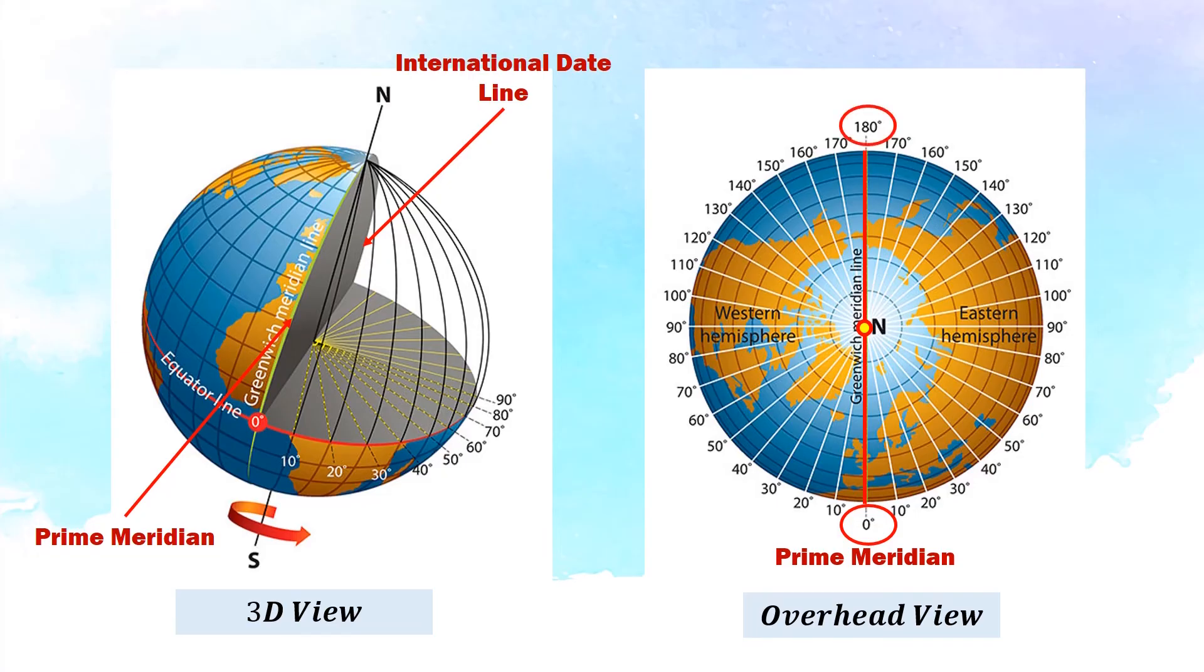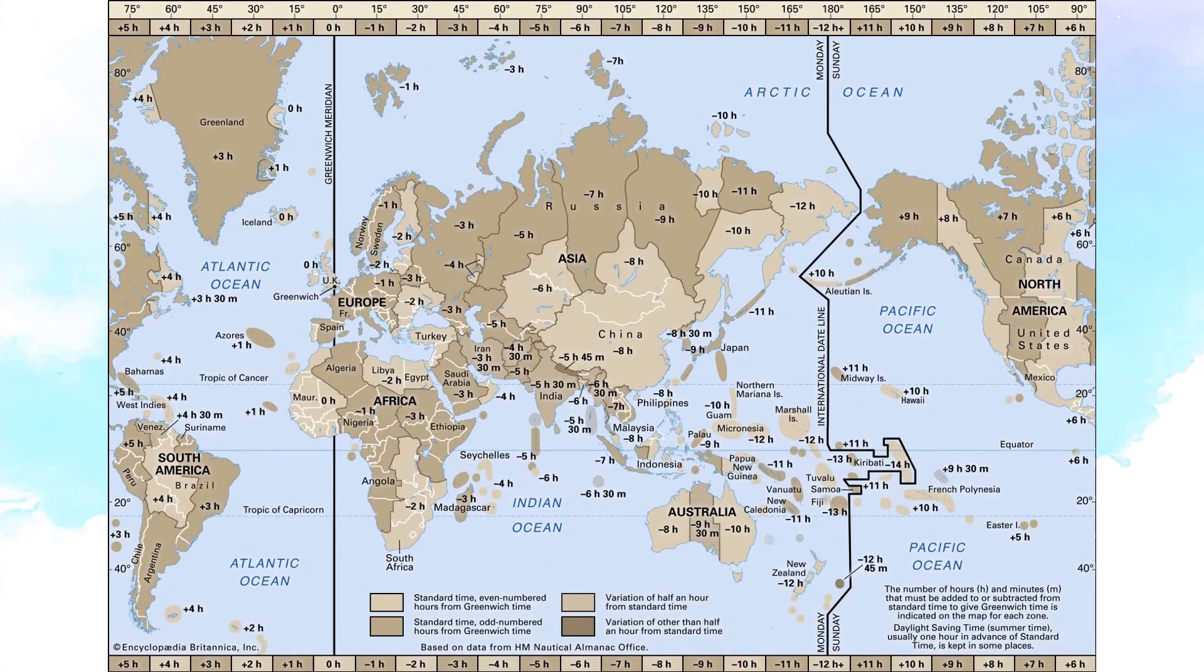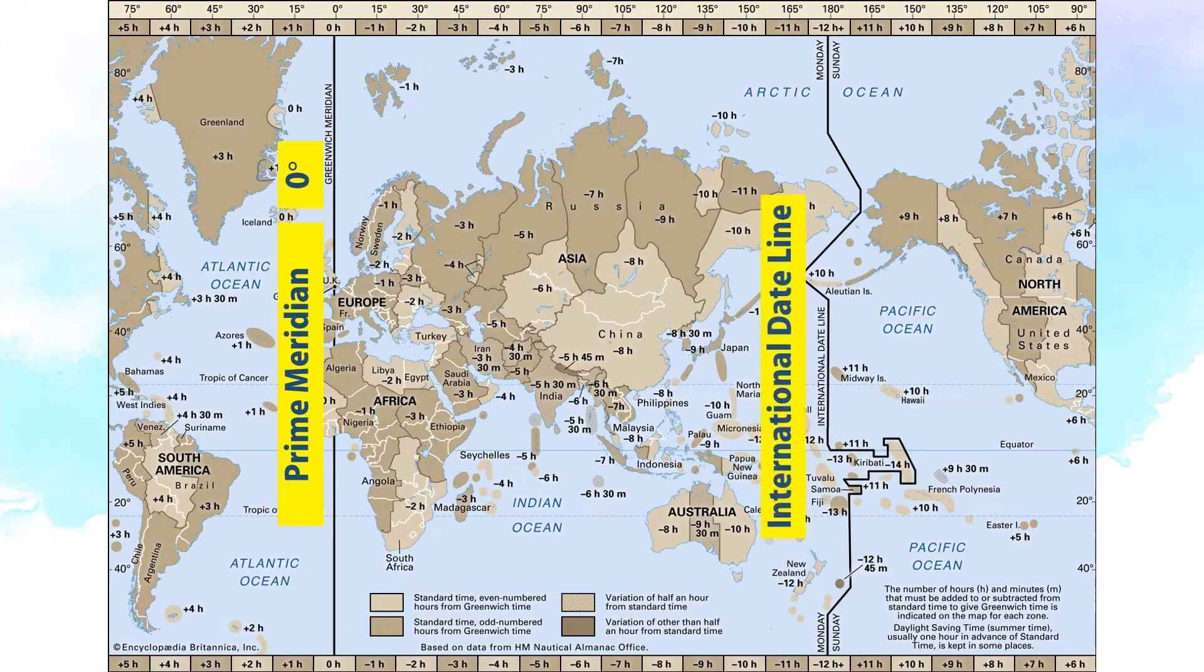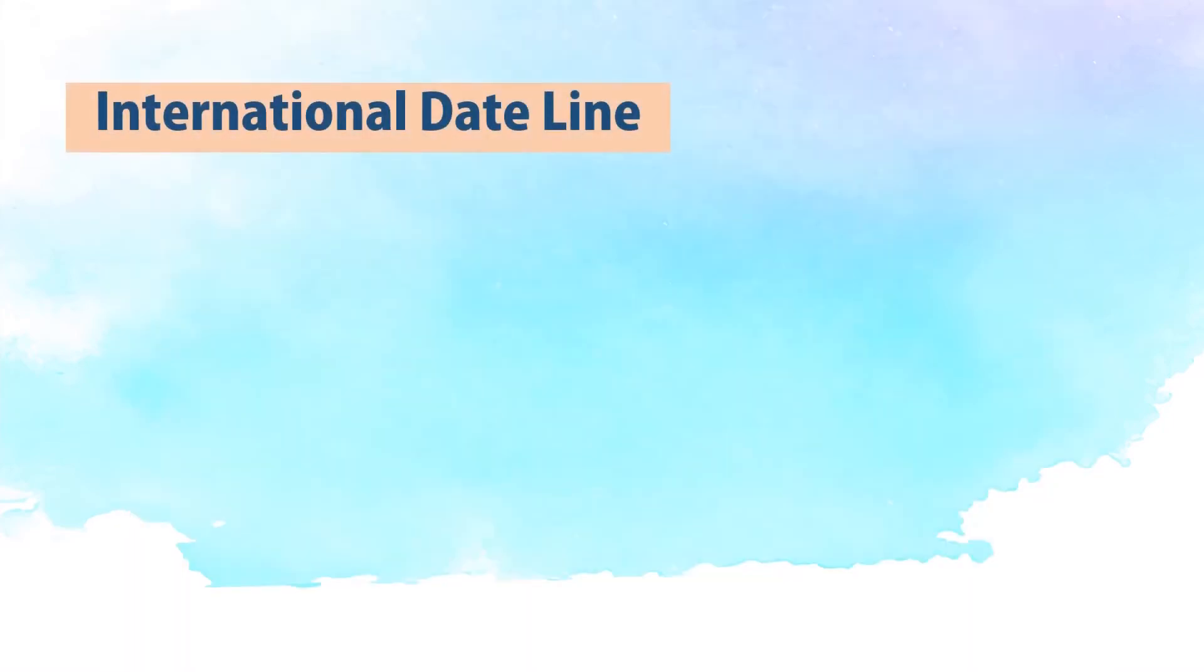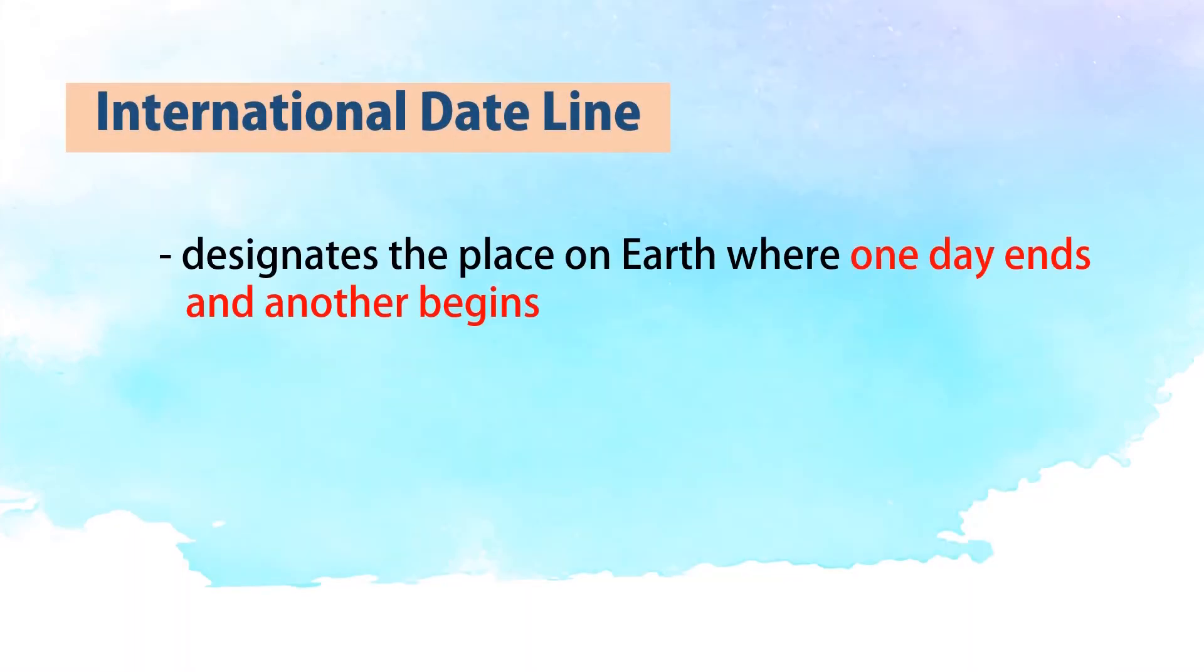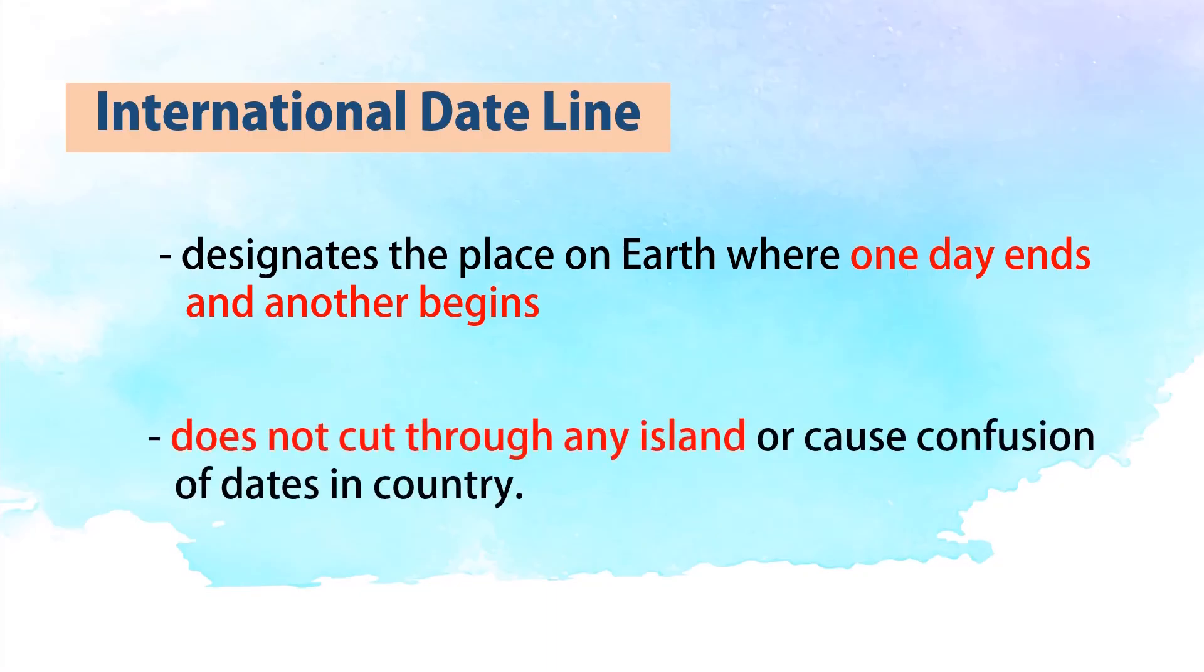On an overhead view of the globe, zero degrees is the location of the prime meridian, while the 180 degrees at the other side is where you can find the international date line. On the map, this is the prime meridian and this is the international date line. The international date line designates the place on Earth where one day ends and another begins.